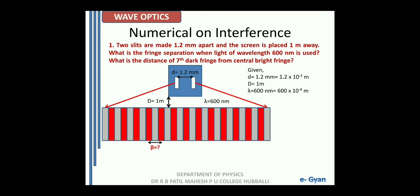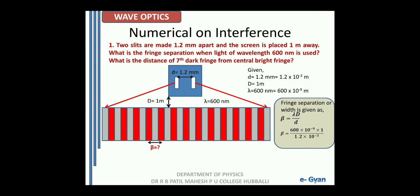The distance between two consecutive bright fringes or dark fringes is the fringe separation or fringe width. The fringe separation or width is given as beta = lambda × D / d. Substituting the values of wavelength, distance between the slits, and distance to the screen, we get the fringe width equal to 0.5 mm.